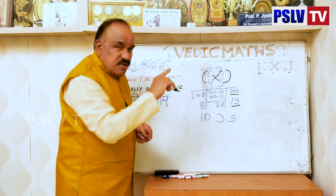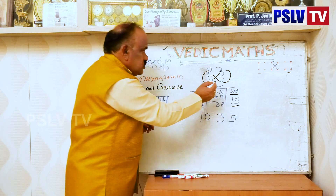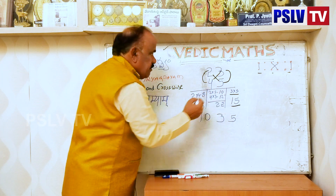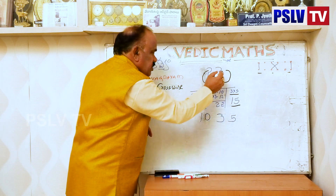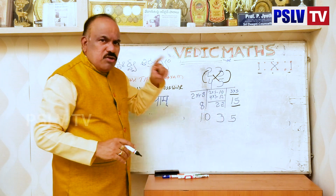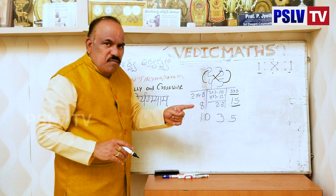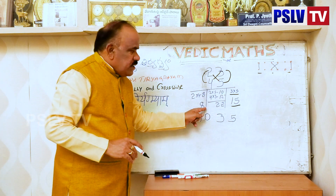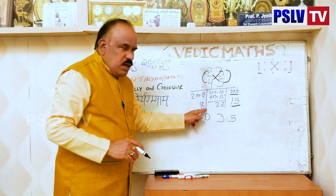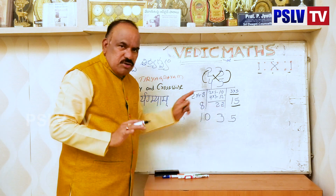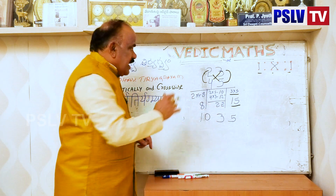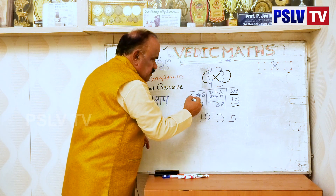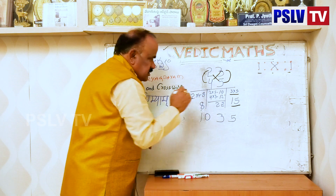Now, crossways: 2 into 5 is 10, and 4 into 3 is 12. All of this you will do in your mind — I am writing it here only for understanding purposes. So the sum is 22. Next step, vertically: 4 into 2 is 8.